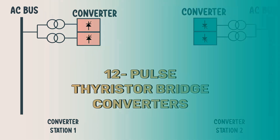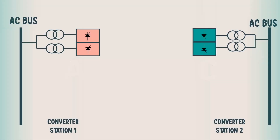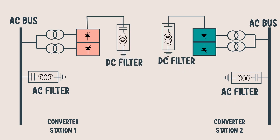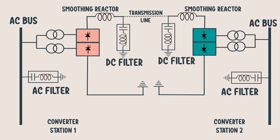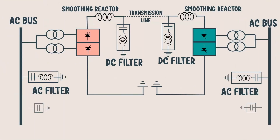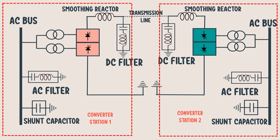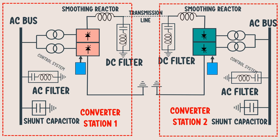These converters cause harmonic problems. To reduce the harmonics, AC filters and DC filters are used. Smoothing reactors are also installed in the DC system to reduce the harmonics and the current ripples. Converters require reactive power, which can be supplied from shunt capacitors, static compensators, or synchronous condensers. We also have switch gears and a very good control system to control the converters.